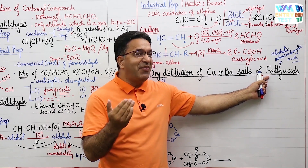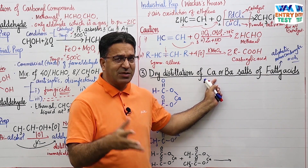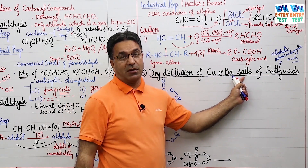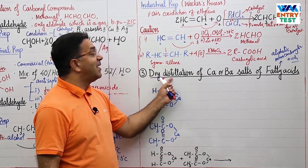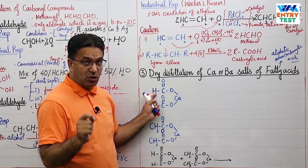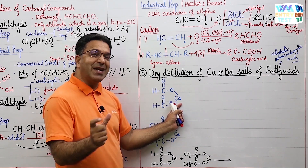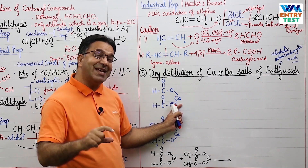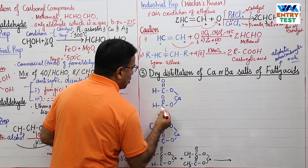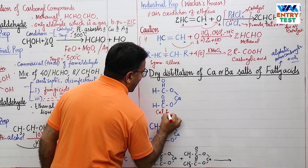If you have a fatty acid, it will undergo a base reaction. Calcium hydroxide and barium hydroxide are bases. You will get a salt. For example, formic acid reacts with calcium hydroxide — acid plus base — to give a salt. The name of this salt is calcium formate.